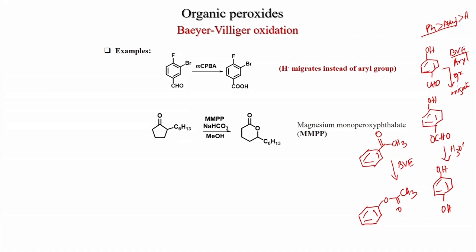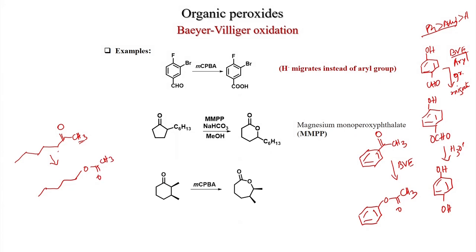A cyclic ketone, cyclopentanone with two substituents, under Baeyer-Villiger conditions using manganese monoperoxyphthalate and sodium bicarbonate in methanol gives the lactone where the more substituted carbon atom migrates. In another example, the more substituted secondary carbon migrates over the primary carbon to give the corresponding lactone. With a chiral cyclohexanone, 2,3-dimethyl cyclohexanone, under MCPBA conditions the more substituted carbon migrates and the chiral groups are undisturbed — stereochemistry is retained.